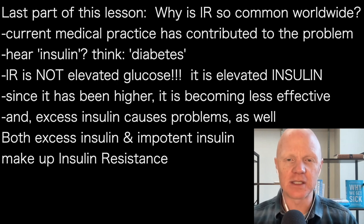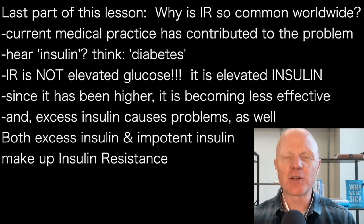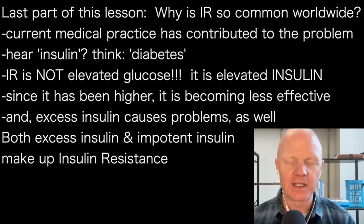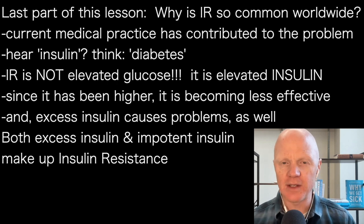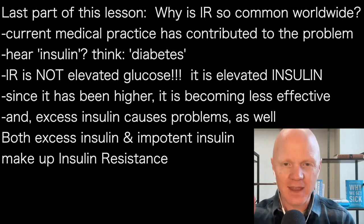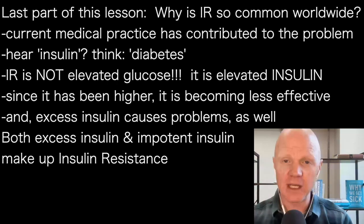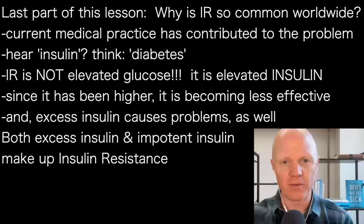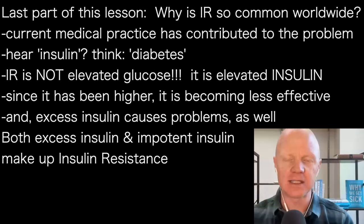Earlier in my definition of insulin resistance, I said that insulin is elevated — not glucose. And therein lies the problem. Insulin resistance, also known as pre-diabetes, is a state where insulin levels are higher by necessity, because insulin isn't working very well. Elevated insulin is both cause and consequence — we'll revisit that next week — but elevated insulin is a cardinal feature of insulin resistance.